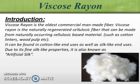Today I will discuss the viscose rayon manufacturing process. Viscose rayon is the oldest commercial fibre. It belongs to the regenerated cellulose fibre family and is a naturally regenerated cellulose fibre that can be made from naturally occurring cellulose-based material, such as cotton linters or wood pulp. It can be found in cotton-like end uses as well as silk-like end uses. Due to its fine silk-like properties, it is also known as artificial silk.